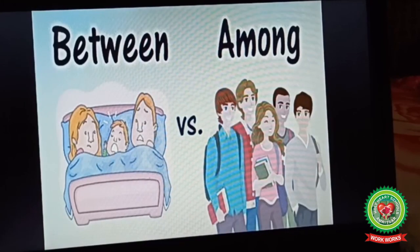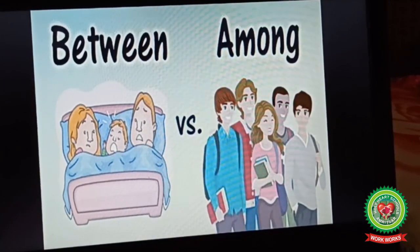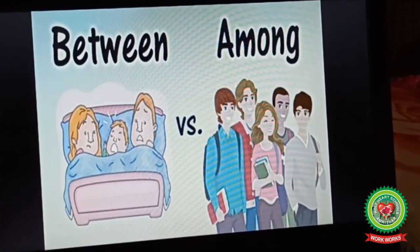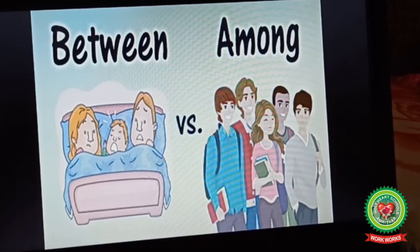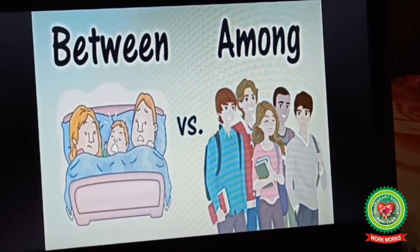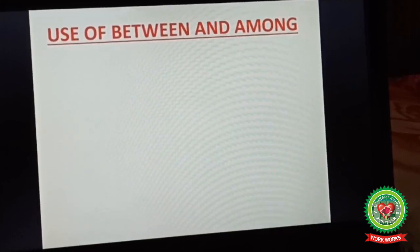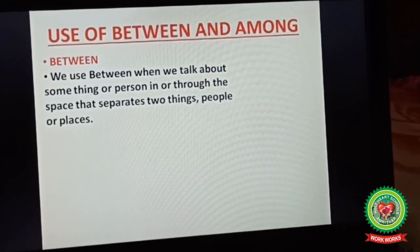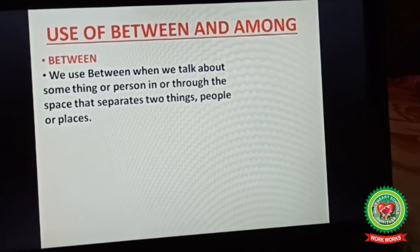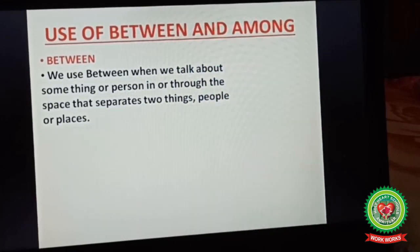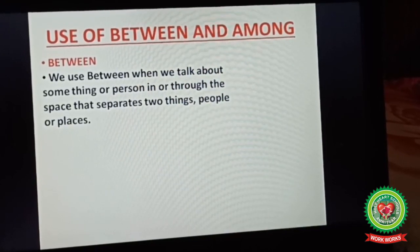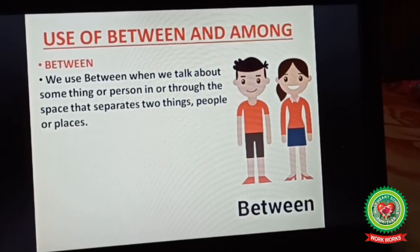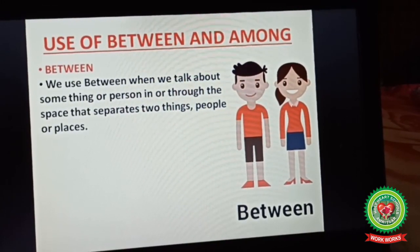Now today we are going to start with prepositions between and among. As you can see in the picture, between is used when we talk about two things or persons. But when we talk about more than two, then we use among. Use of between: we use between when we talk about something or a person in or through the space that separates two things, people or places — when two things are clearly separated from each other, we use between, as you can see in the picture.